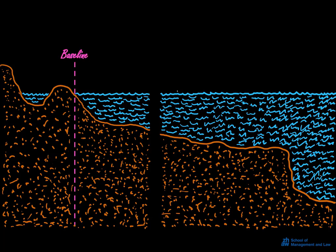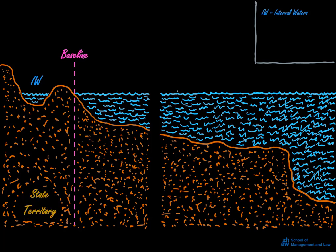All the different zones refer to the baseline, which normally corresponds to the low water line along the coast. This is where we have to start. Water areas that are located landwards from the baseline, such as bays and harbors, are so-called internal waters. They are fully under the sovereignty of the coastal state. Internal waters are just part of the state territory.